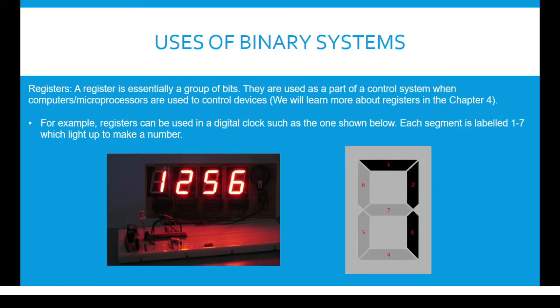The use of binary systems — Registers. A register is essentially a group of bits. They are used as part of a control system when computer or microprocessors are used to control devices. We will learn more about this in the fourth chapter. For example, registers can be used in a digital clock such as the one shown. Each segment is labeled 1 to 7, which lights up to make a number. So if we want to make the number 7, segments 1, 2, and 3 will light up.